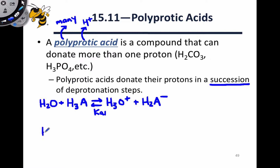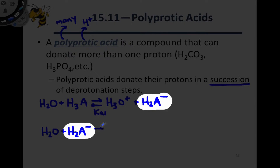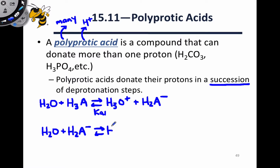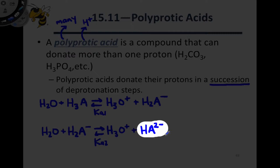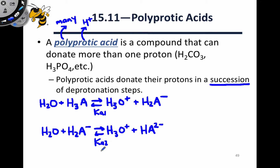There is another Ka value that's completely distinct for deprotonation of that conjugate base a second time. This is an entirely different process with its own K value, Ka2, where the 2 signifies that this is the second deprotonation. We end up with a second conjugate base with a charge of 2⁻. There is also a Ka3 associated with a third deprotonation that forms A³⁻.